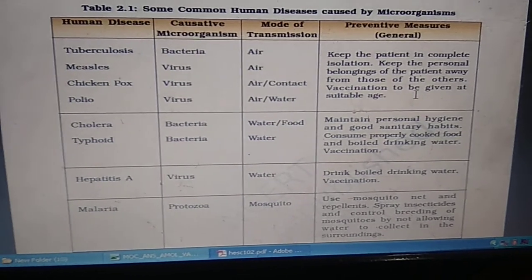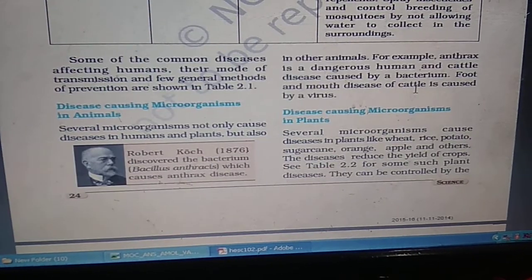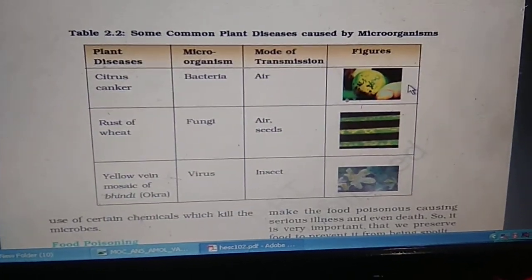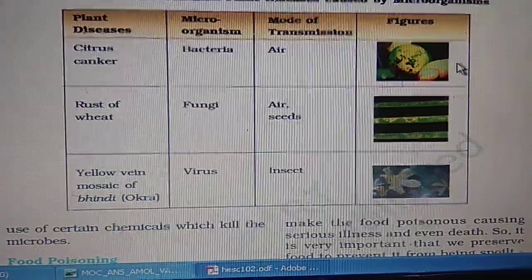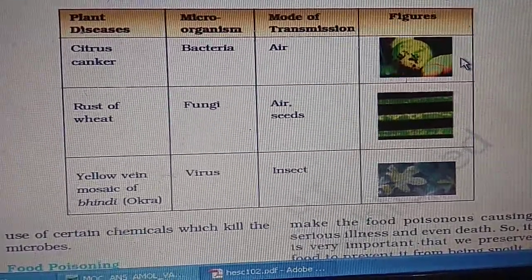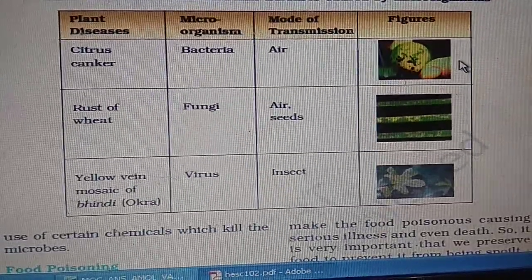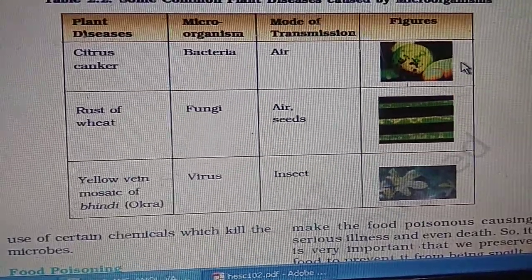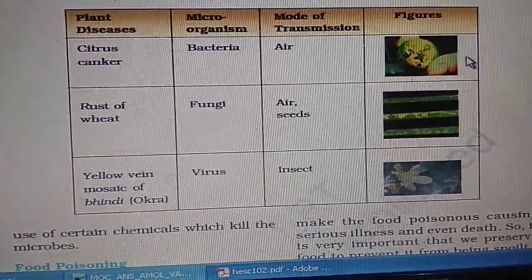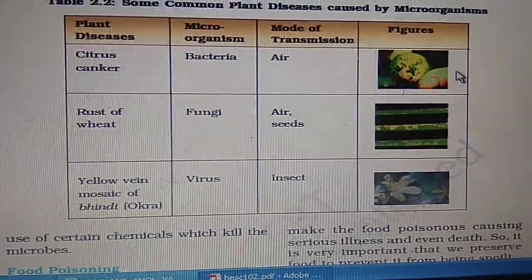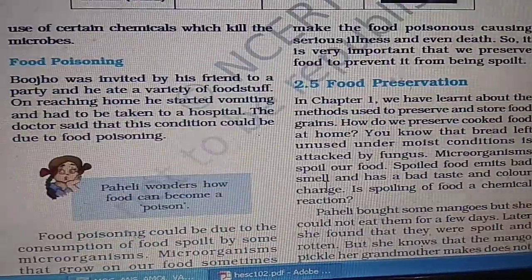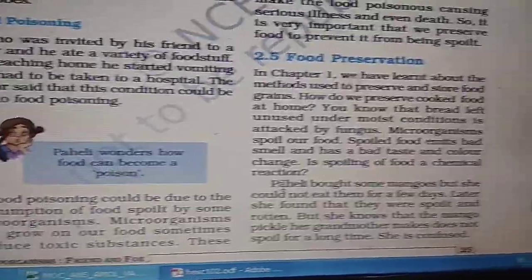This table is important — please learn it. There are also some plant diseases caused by microorganisms. Bacteria cause citrus canker, fungi cause rust of wheat, and a virus causes yellow vein mosaic of bhindi (okra). Food poisoning occurs when we consume spoiled food containing microorganisms, causing sickness.